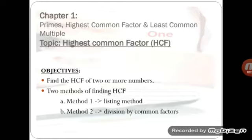By the end of the lesson you will be able to find the HCF of two numbers or more than two numbers. You will also be able to find HCF by two methods. Method one is about listing given numbers as a product of their prime factors, while method two is about division of given numbers by their common prime factor.